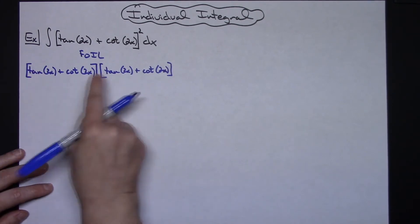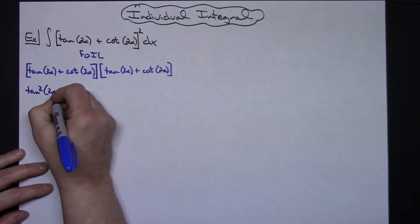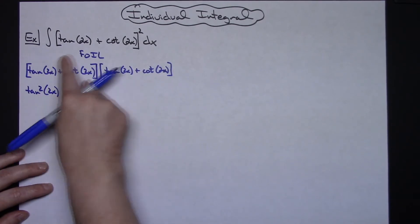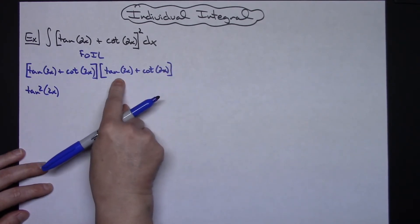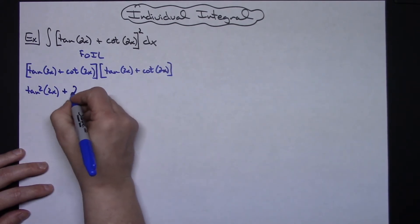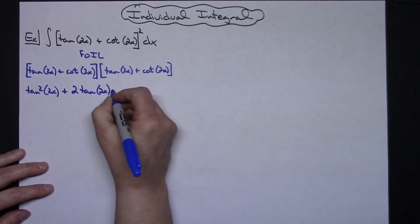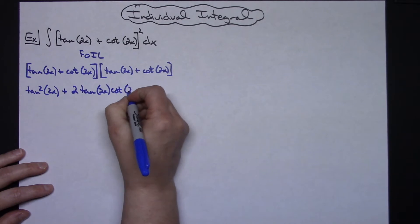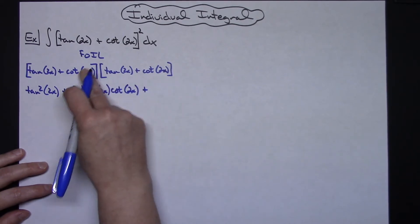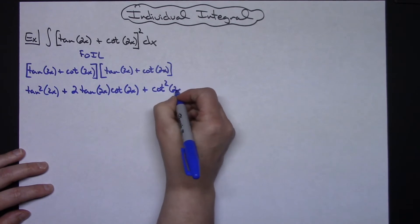Alright, so on first terms I will have a tangent squared of 2x. Alright, we can do outside terms and inside terms since they're both going to turn out the same of a tangent and cotangent there we'll just have two of them. So plus 2 tangent of 2x and then cotangent 2x. And then multiplying last terms there we'll have cotangent squared of 2x.